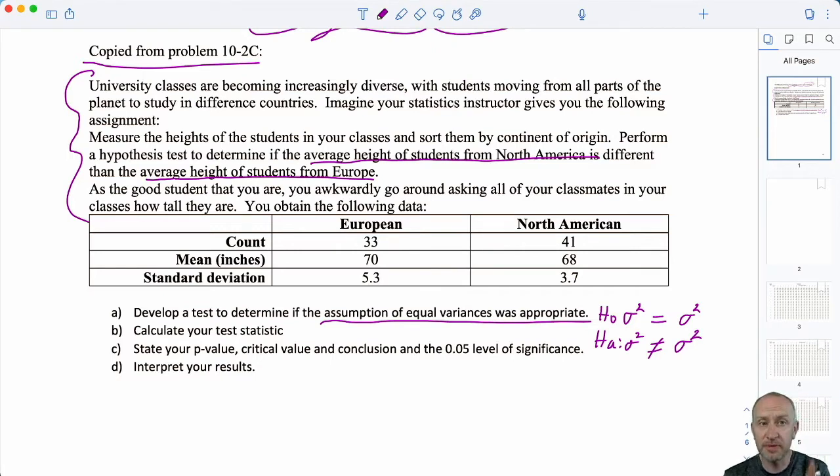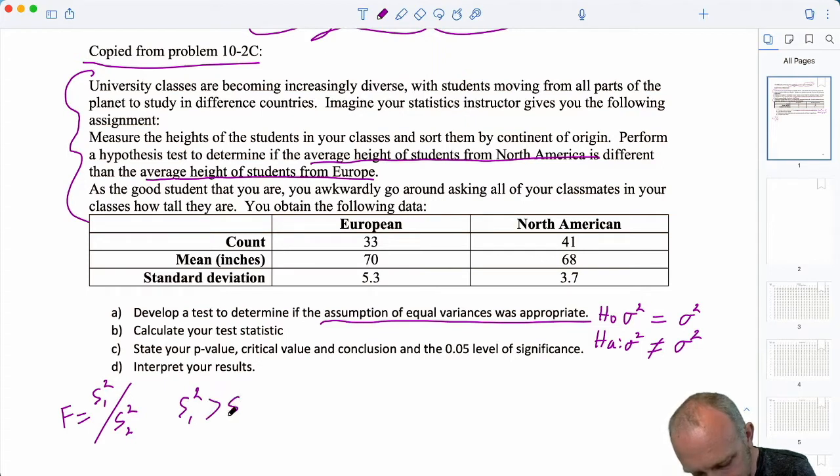We have to define our terms and again when we're doing an f test using the f distribution tables we have to formulate it so that our test statistic falls on the upper portion of that test statistic or of that distribution. So when we have our test statistic like this we have to make sure that we formulate it so that population one is the population that has the larger sample variance. This ensures that the test statistic will fall in the upper portion of that f distribution.